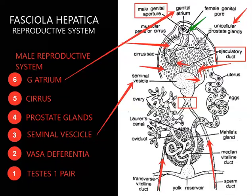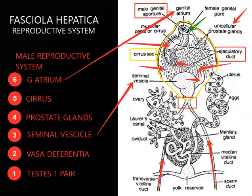The cirrus sac is a bag-like structure demarcated here. It encloses a number of structures in the male reproductive system. It encloses: number one, the seminal vesicle; number two, all the prostate glands; number three, the prostatic duct; and number four, the cirrus. So all four of these structures are present inside this sac.